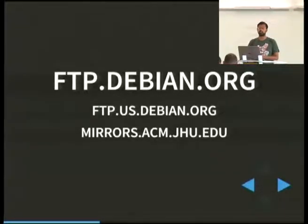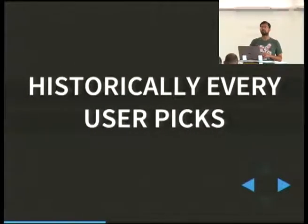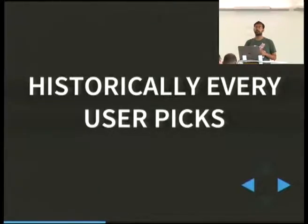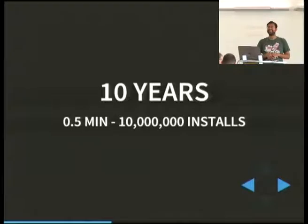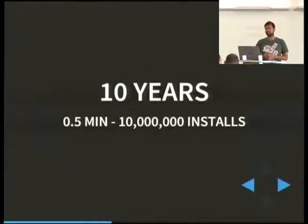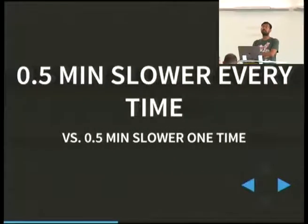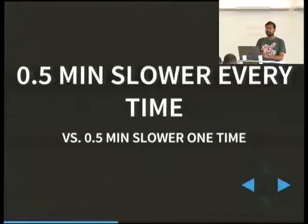The way that mirrors work in Debian, generally speaking, is that every user picks what mirror to use. If you estimate that it takes people about half a minute to figure out what mirror to use, and optimistically decide there are ten million installs per year, then there's about ten human years that people spend every year picking mirrors. I could cynically say it's like we're killing ten people every year, because we're taking their life away in aggregate. So you might want to remove that selector, but that's not necessarily the best way to do it, because then people will spend half a minute every time they install something — if they install things ten times a year, that's ten times as much waste.